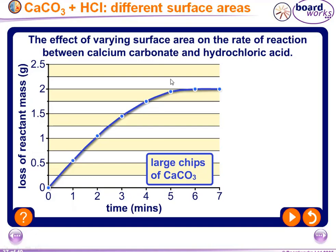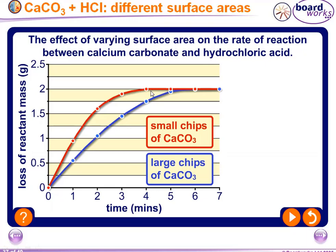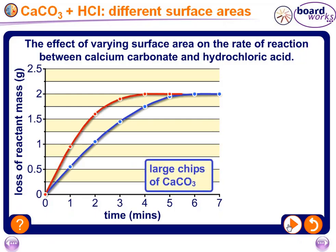The reaction starts at zero and ends at the fifth minute for the large chips; the overall mass of carbon dioxide collected was 2 grams. When we use smaller chips — larger surface area — more collisions occur and a higher rate results, so the curve is steeper. The small chips reaction stops at four minutes, which we find by drawing a perpendicular line from where the curve goes flat to the x-axis. So smaller chips take less time than larger chips.